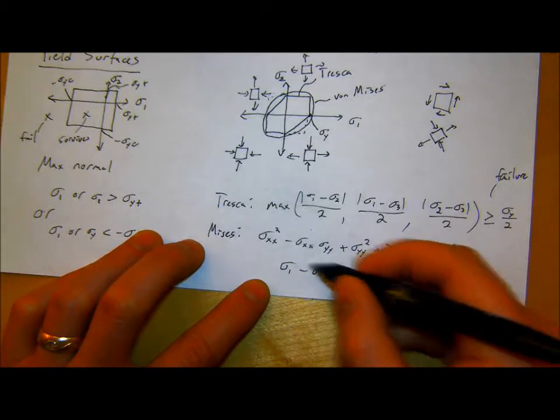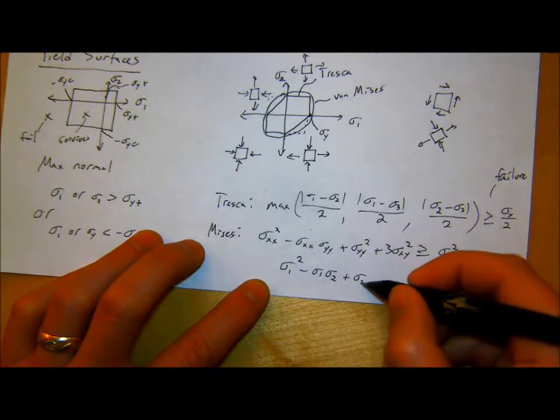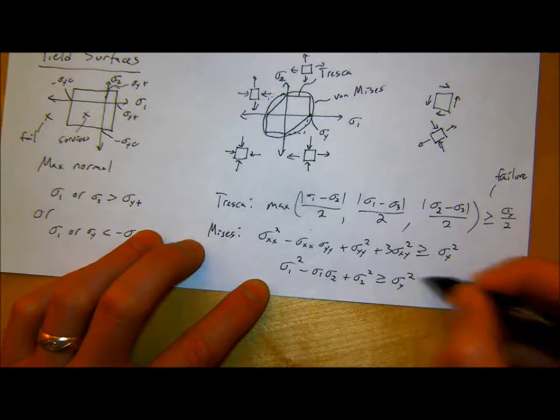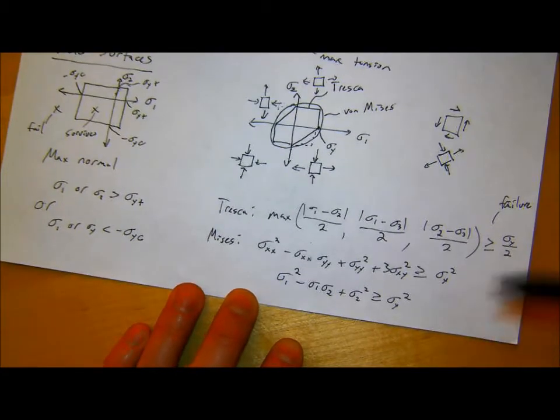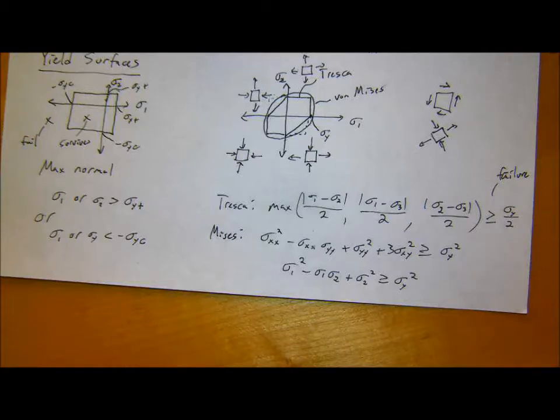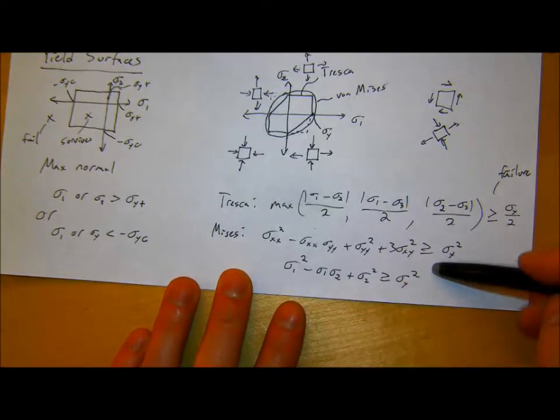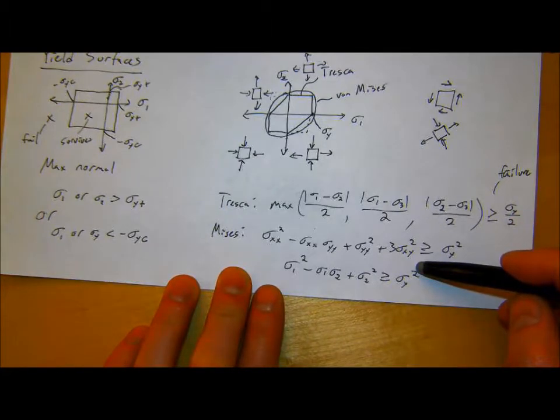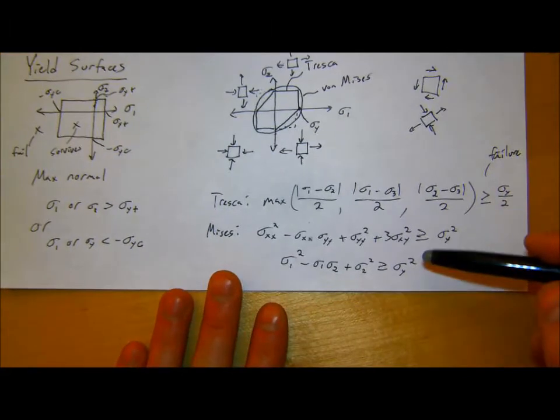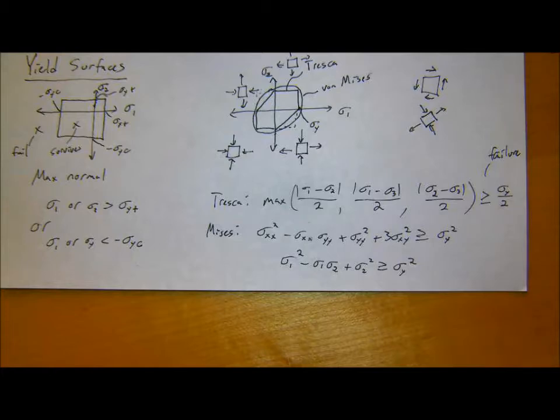For Von Mises, know the relationship in 2D and in 3D. Both of them are useful. In 3D, I have it in the notes that I'll post. I'm not going to write it all out. In 2D, it's sigma xx squared minus sigma xx sigma yy plus sigma yy squared plus 3 sigma xy squared is greater than or equal to the yield strength squared. You technically don't need the principal stresses to solve. That is a general overview of all the stuff you should know for the midterm.